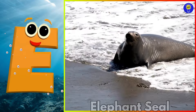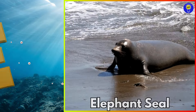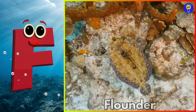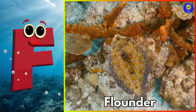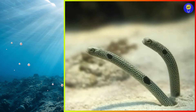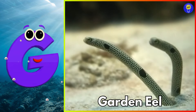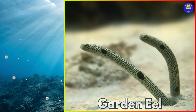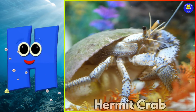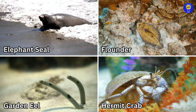E is for elephant seal. Eh, elephant seal. F is for flounder. Fuh, flounder. G is for garden eel. Guh, garden eel. H is for hermit crab. Ha, hermit crab.